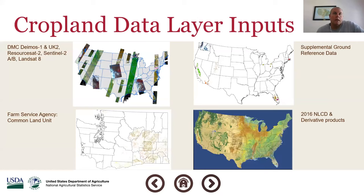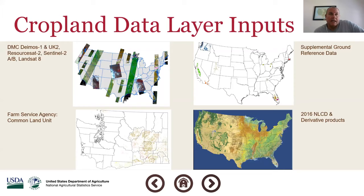Here are the major inputs for the Cropland Data Layer — or CDL. We use data from the DMC, the Disaster Monitoring Constellation — the DEIMOS-1 and UK-DMC-2, used up until 2019. We also use RESOURCESAT-2, run by the Indian Space Research Organization, Sentinel-2 A and B from the European Union's Copernicus program, and Landsat 8 at medium resolution — 30 meters — launched in 2013. Landsat 9 is getting ready to launch in a year or so. In the bottom left, the Farm Service Agency Common Land Unit provides us the agricultural training data for our supervised land cover classification.